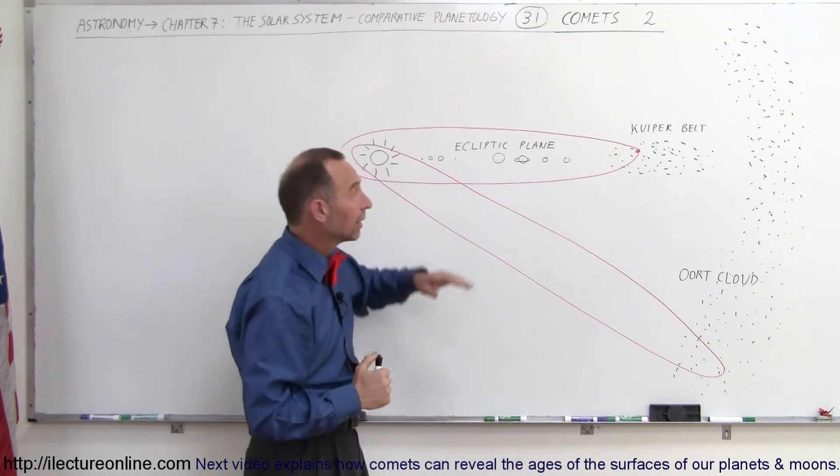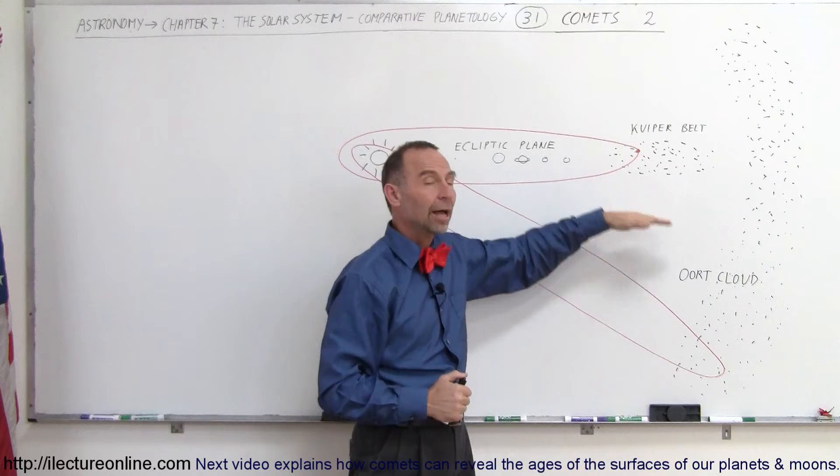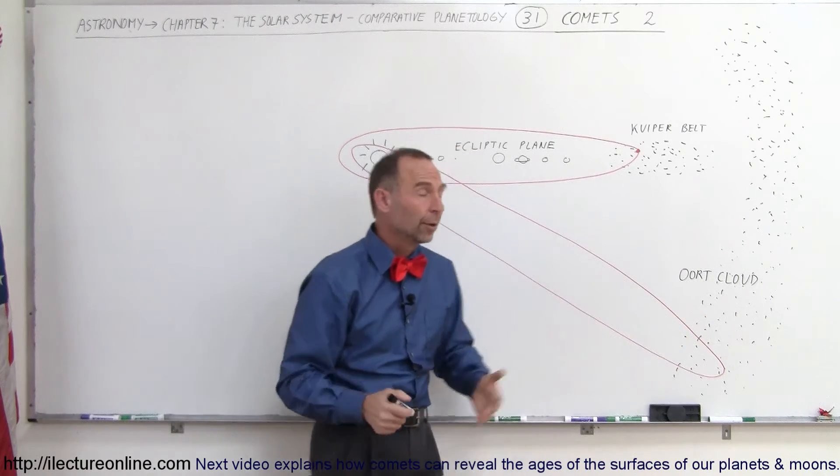Now, how do we know that a comet came from the Kuiper Belt, and how do we know a comet came from the Oort cloud?